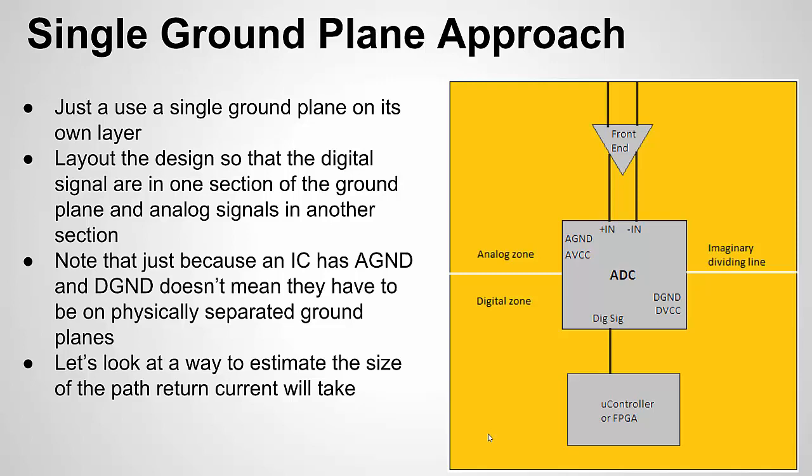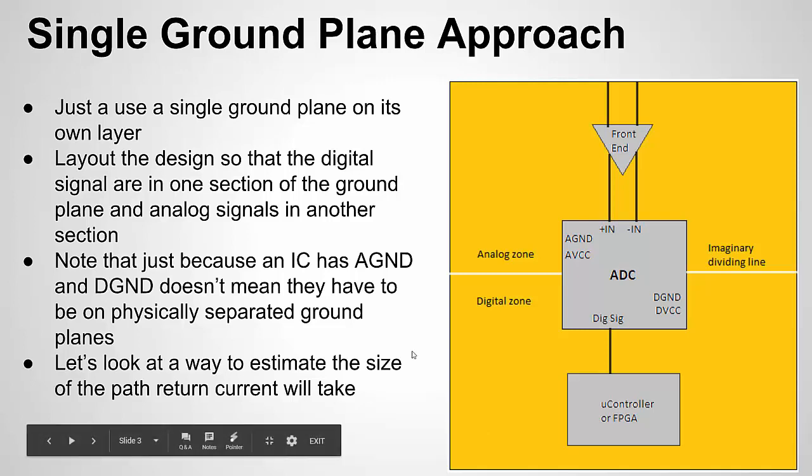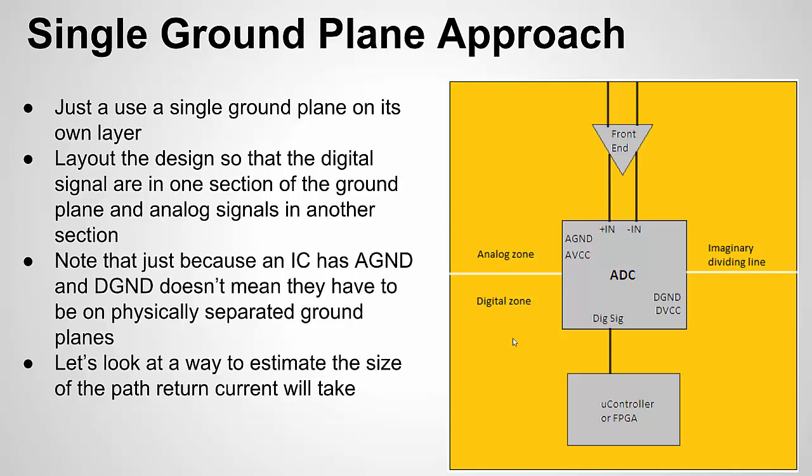The single ground plane approach is exactly what it sounds like — a single contiguous layer on the PCB used as the ground plane. We're not separating ground planes; instead, we create zones or sections and designate them for analog or digital signals. We're not going to have traces and return currents from digital signals in the analog zone, and vice versa. I made it half analog and half digital here, but in real life the split doesn't have to be symmetrical — it can be based on the circuits on each side.